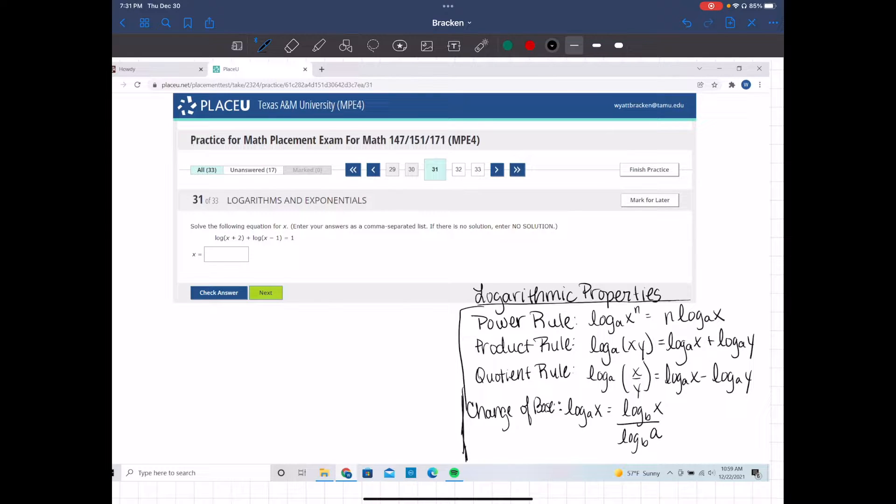Now the one that we're going to use in particular right here is the product rule because this goes both ways since it's equal. So what that means is log base A of x plus log base A of y actually equals log base A of x times y. One other thing that you need to remember here: if I have log of x, this is the same thing as a base 10.